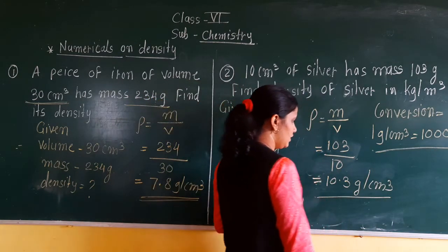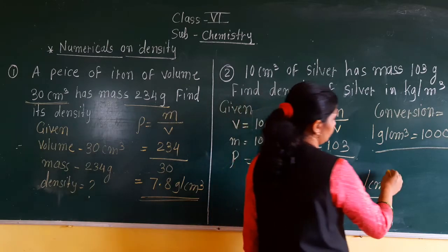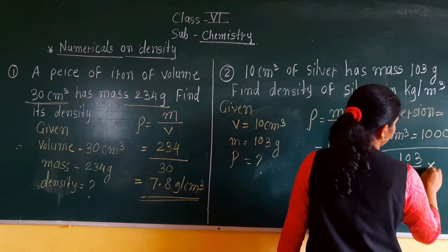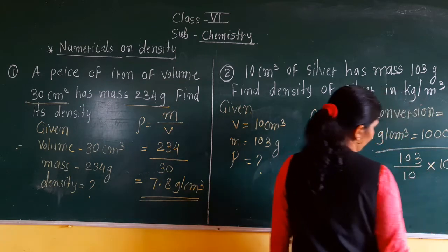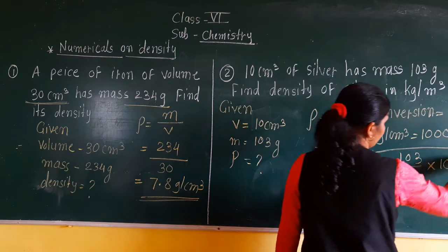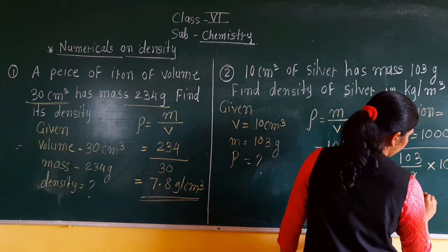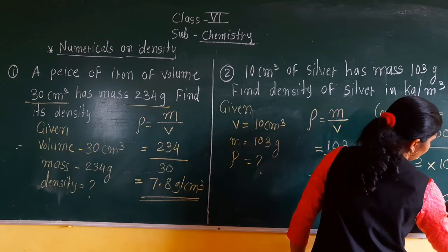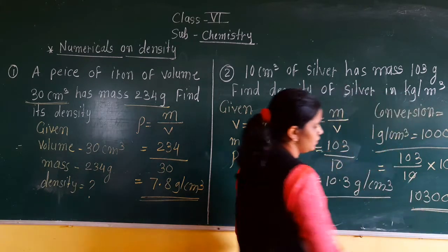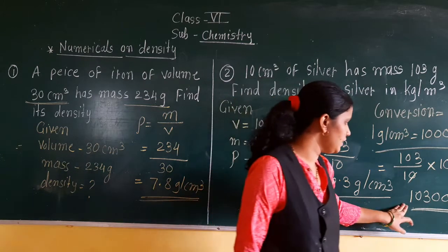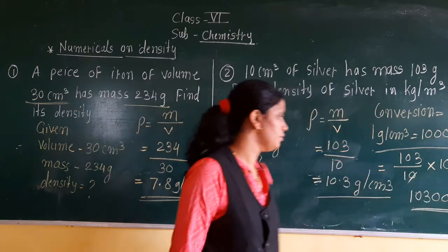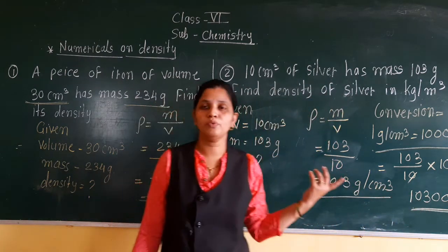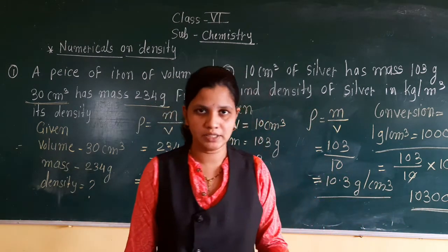So we will multiply 10.3 by 1000, which gives 10300 kg per meter cube. So this is the density in kg per meter cube. These two are the examples of density.